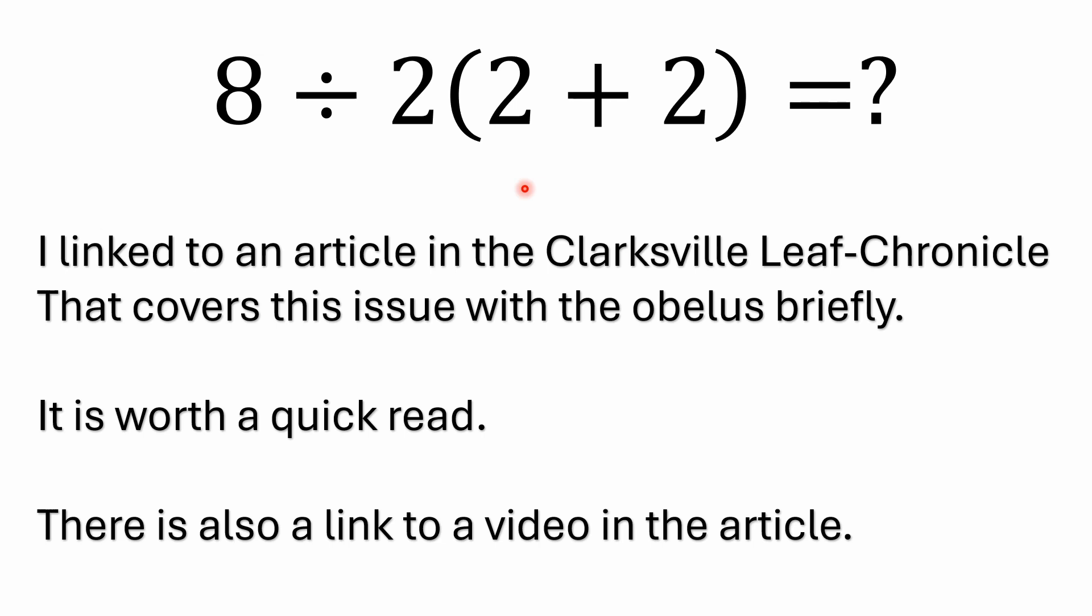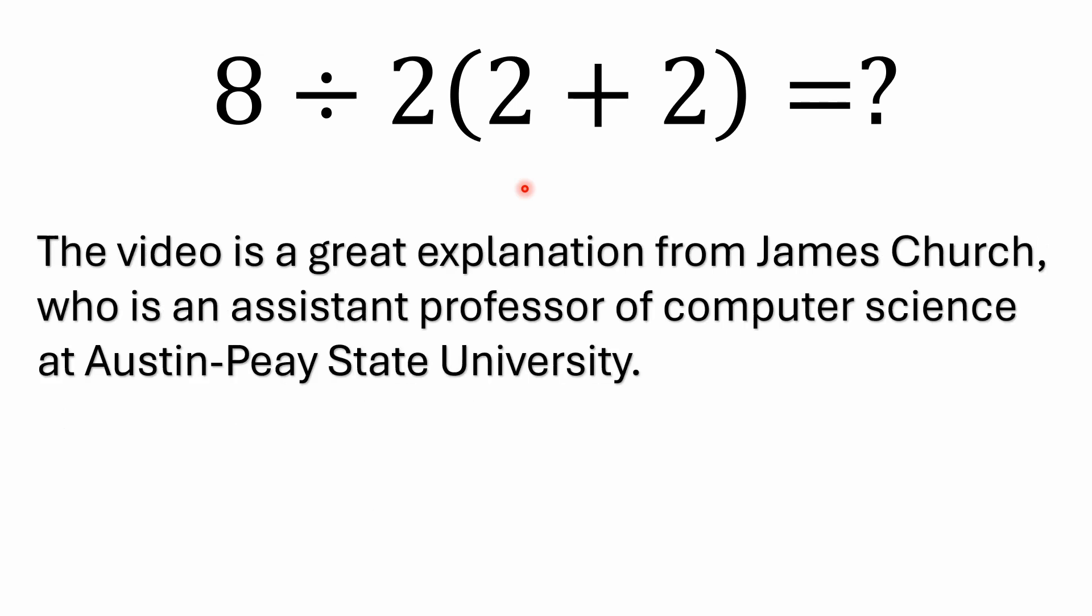It does talk about the obelisk, and I got a link to a video. It's a pretty good explanation. It's from James Church, who's an assistant professor of computer science at Austin Peay State University, and he goes through the controversy and the use of obelisk. A lot of people, when they see this problem, the argument always centers around the multiplication by juxtaposition and often it doesn't even consider this whole other controversy over the obelisk. It's about a three and a half minute video that's linked to in that article, and it's worth taking a look at.